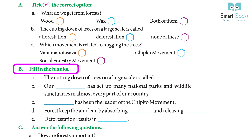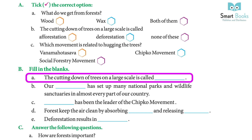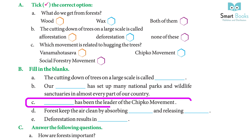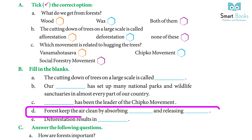Exercise B — Fill in the blanks. (a) The cutting down of trees on a large scale is called: deforestation. (b) Our government has set up many national parks and wildlife sanctuaries in almost every part of our country: answer — government. (c) Dash has been the leader of the Chipko Movement: answer — Sundarlal Bahuguna. (d) Forests keep the air clean by absorbing dash and releasing dash: answer — carbon dioxide and oxygen.